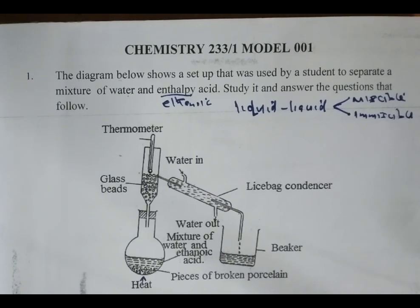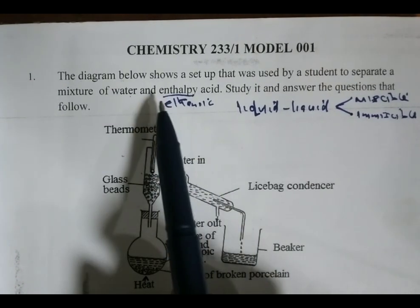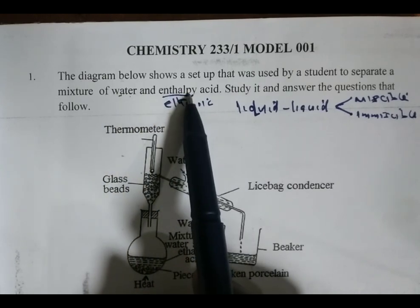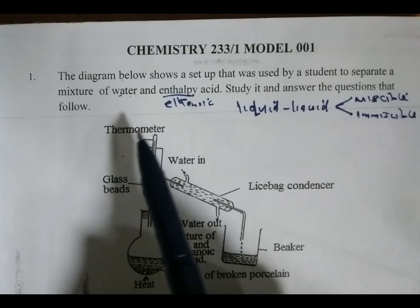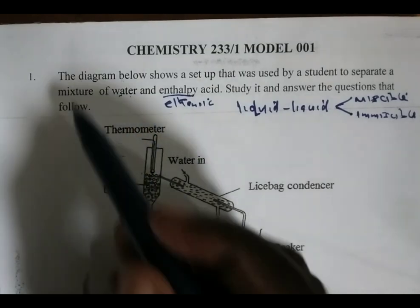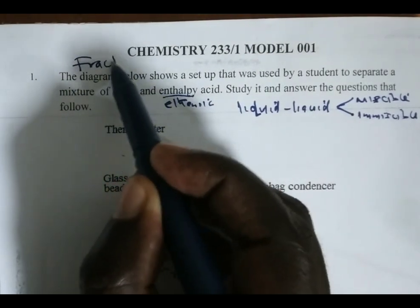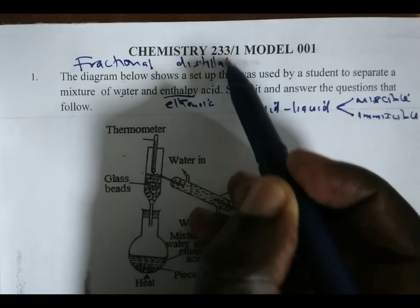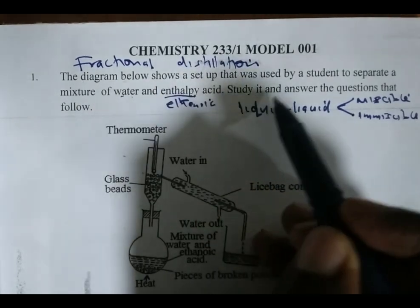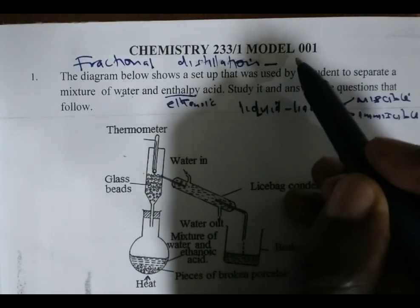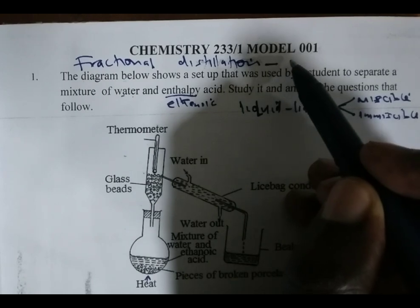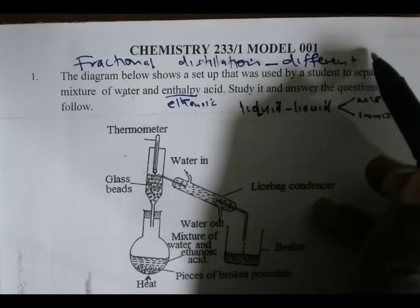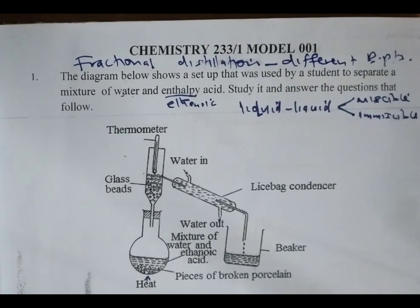In this case, the mixture we have, which is a mixture of water and ethanoic acid, are miscible liquids and miscible liquids are separated by a process known as fractional distillation. The reason why we use fractional distillation is because the liquids have different but close boiling points.